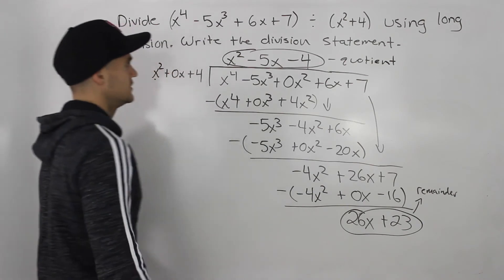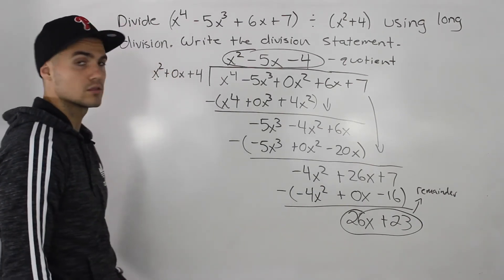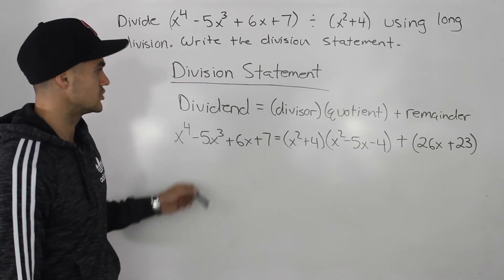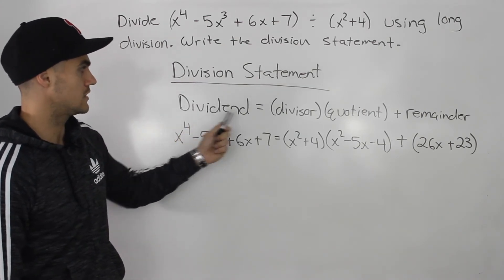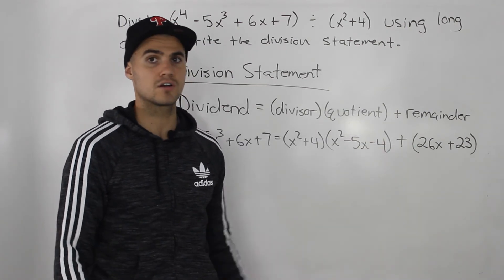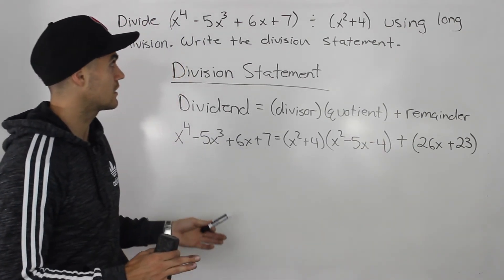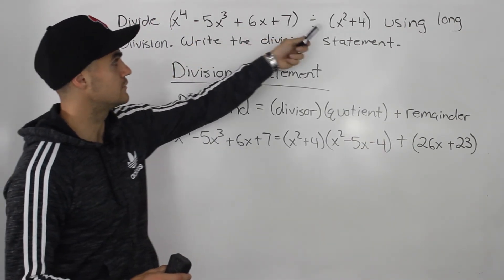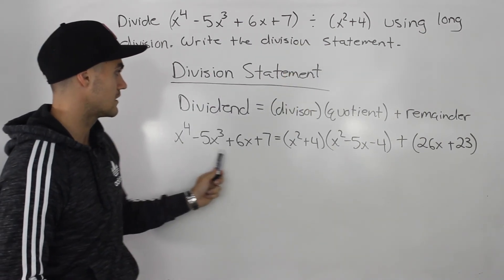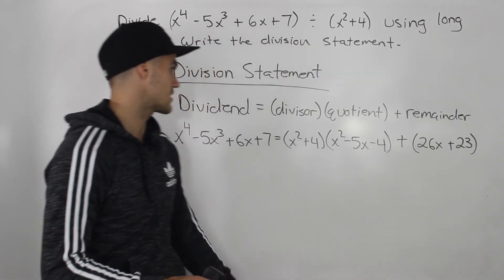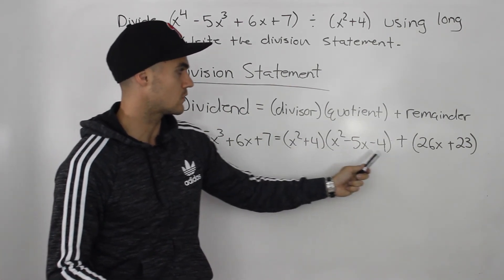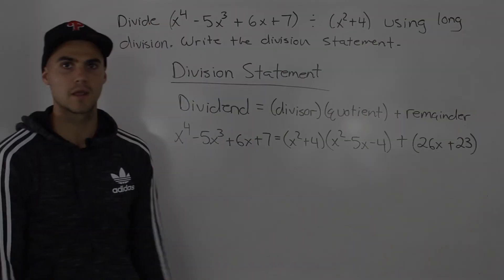So we are done with the long division. To finish the question off, we write the division statement. In general, the division statement is: the dividend equals the divisor times the quotient plus the remainder. Taking the quotient we found with the long division, we can now write the complete division statement: dividend equals divisor times quotient plus remainder.